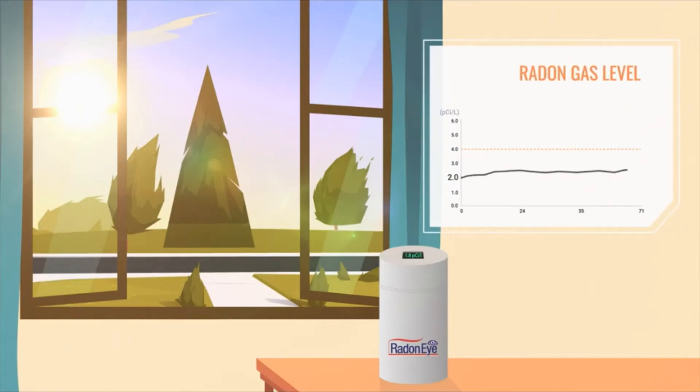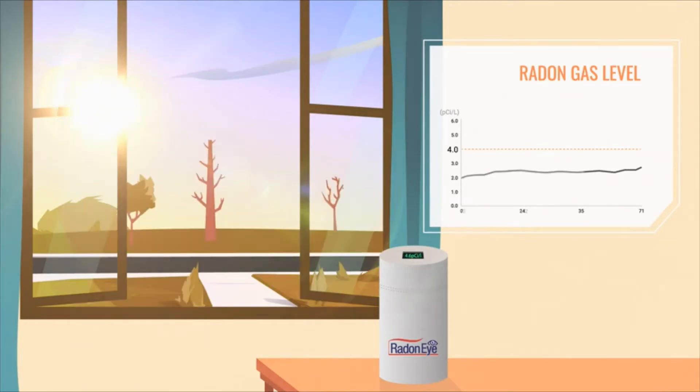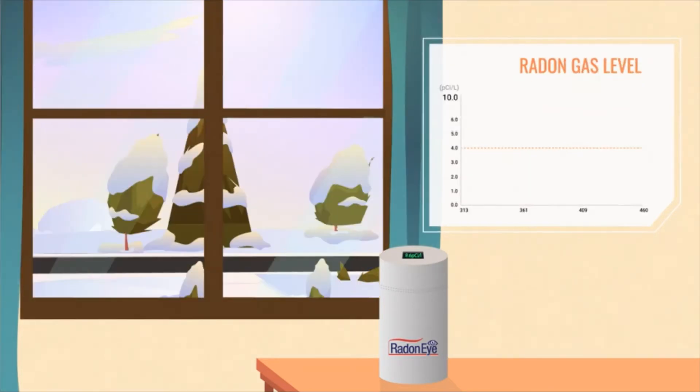However, radon levels can fluctuate drastically with the changing seasons, causing radon amounts to be lower in summer and high during the winter. By January, Julia's radon levels were hovering around 9.25 picocuries per liter, a dangerous level that prompted her to fix her home.